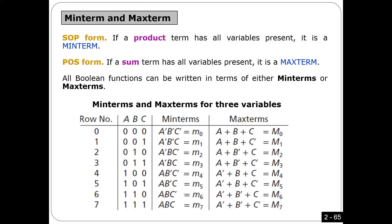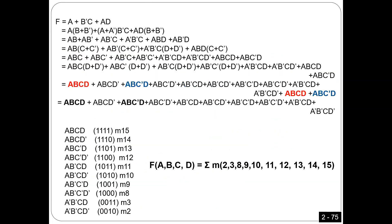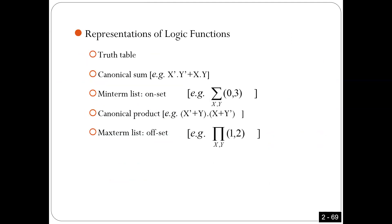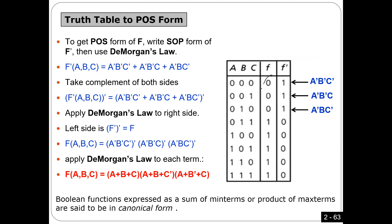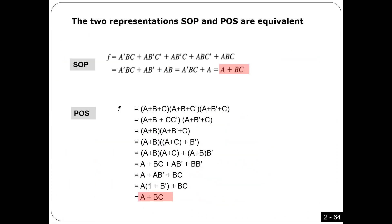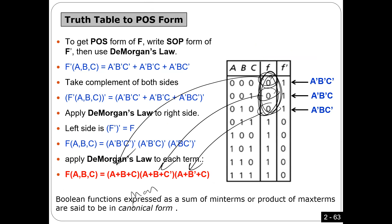When you put it in product of sum, just in case you want to implement this function using only NOR gates — that's what we actually do. We like to implement everything using only one gate: either NAND or NOR.